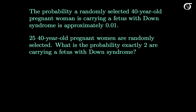The probability that a randomly selected 40-year-old pregnant woman is carrying a fetus with Down syndrome is approximately 0.01. 25 40-year-old pregnant women are randomly selected. What is the probability that exactly two are carrying a fetus with Down syndrome? We have 25 trials — a fixed number. The women are randomly selected, so knowing whether one woman is carrying a fetus with Down syndrome tells us nothing about whether a different woman is, so the trials are independent. The probability any one woman is carrying a fetus with Down syndrome is 0.01, which is constant from trial to trial, and we are counting up the number of successes.